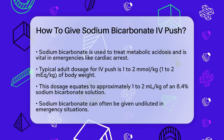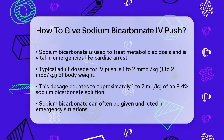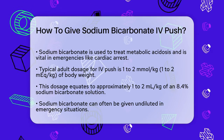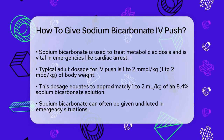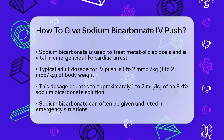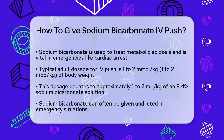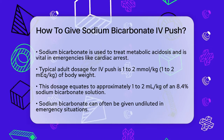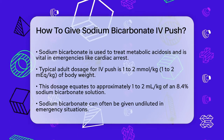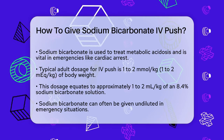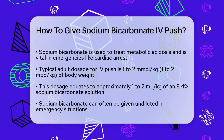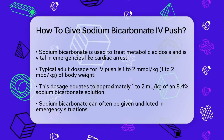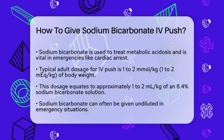Dosage and preparation. For adults, the typical dose for an IV push in cardiac arrest or severe metabolic acidosis is 1 to 2 mEq/kg of body weight. This translates to about 1 to 2 mEq/kg of an 8.4% sodium bicarbonate solution.